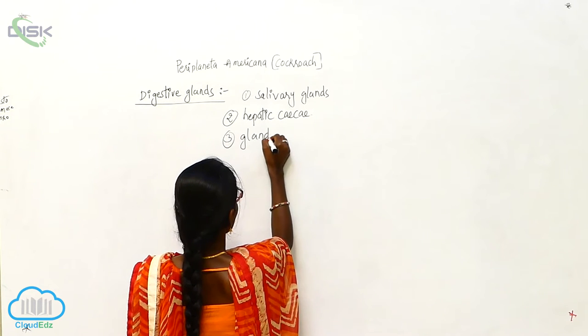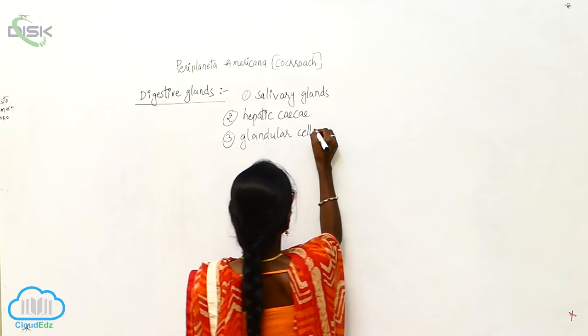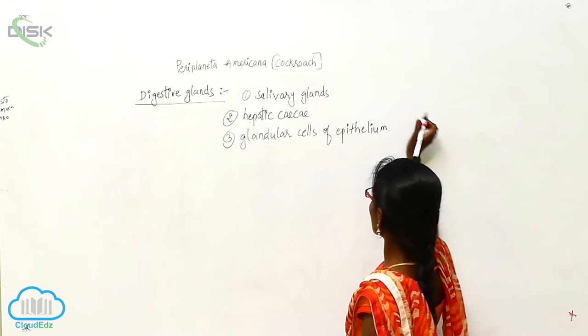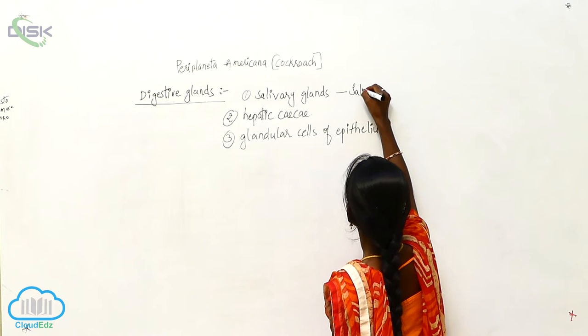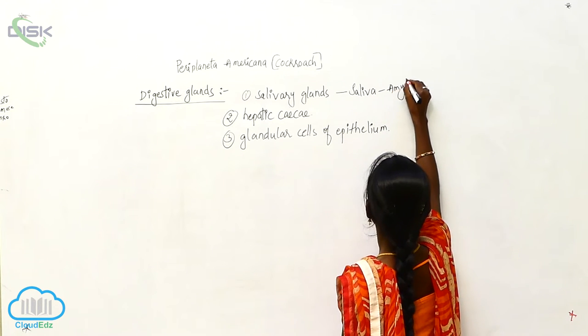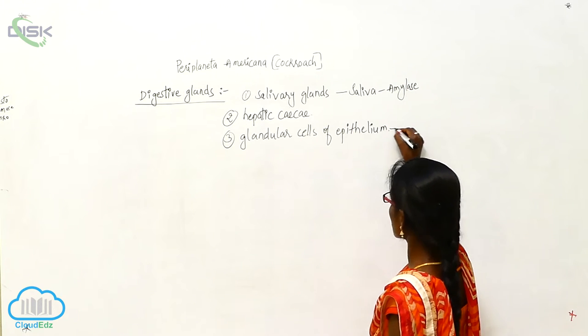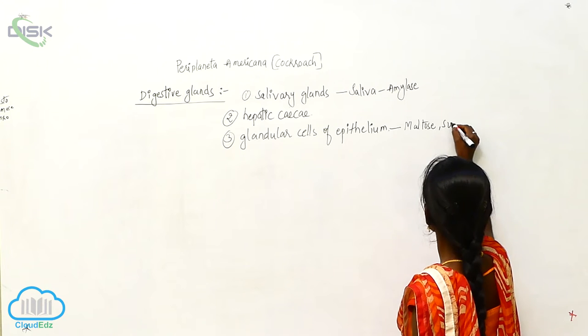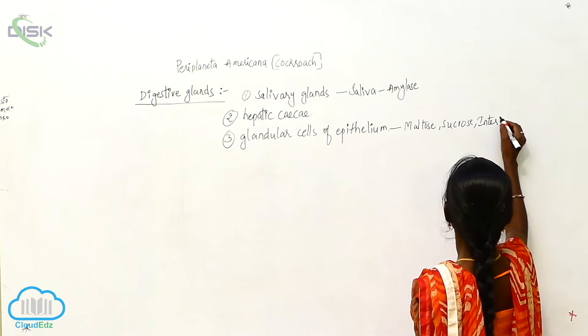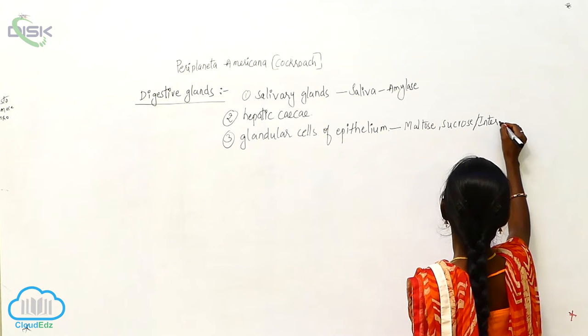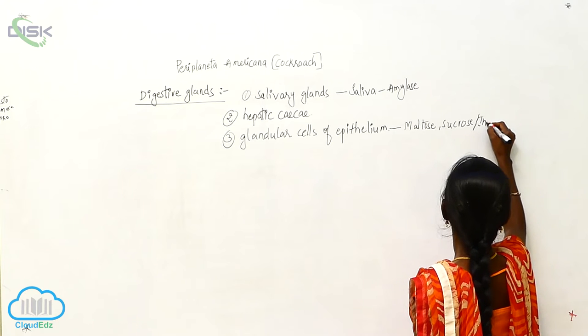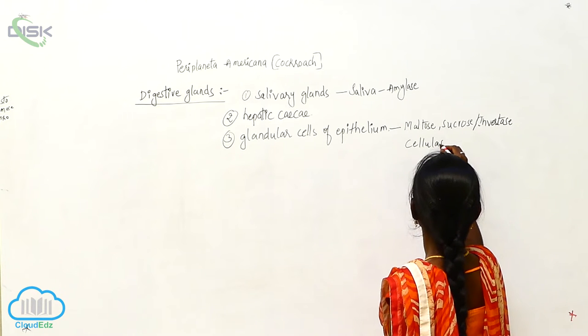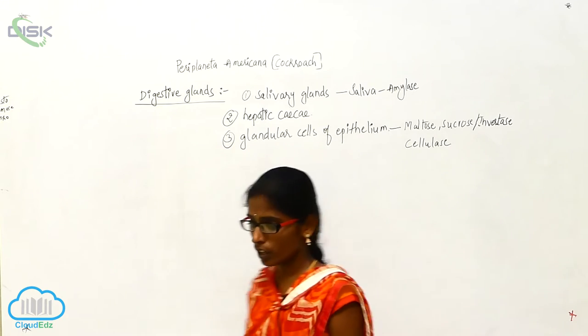Third one is glandular cells of epithelium. So here the salivary glands produce saliva that contains amylase. These glandular cells of epithelium produce the maltose, sucrose, invertase, and cellulase. So these are secreted by the glandular cells of epithelium.